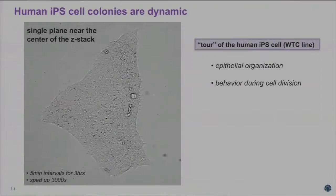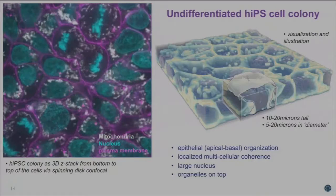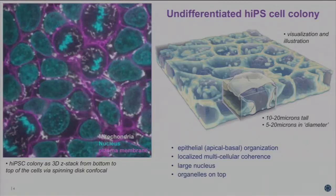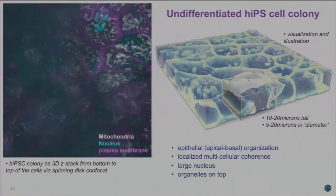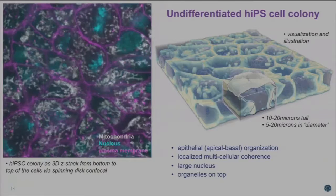They grow in beautiful colonies. They're very dynamic — you can see the colonies spreading as they divide. When you look more closely, labeling the nucleus, plasma membrane, and mitochondria, you can see in 3D that cells sit on top of each other, very closely packed and three-dimensional. The nucleus takes up about 50% of the volume of the cell, and organelles sit right on top. The cells are about 10 to 20 microns tall and 5 to 20 microns in diameter.